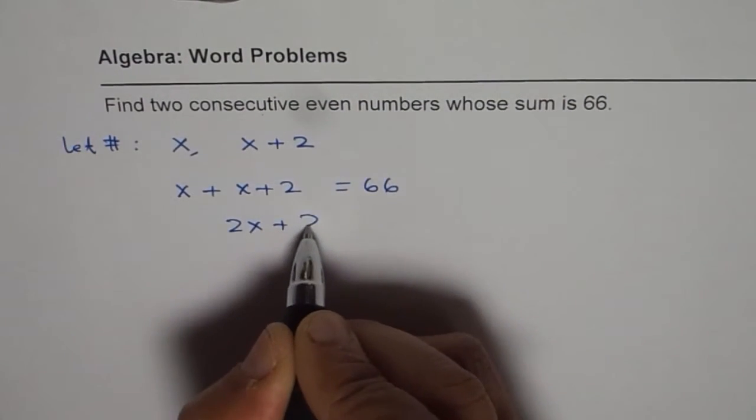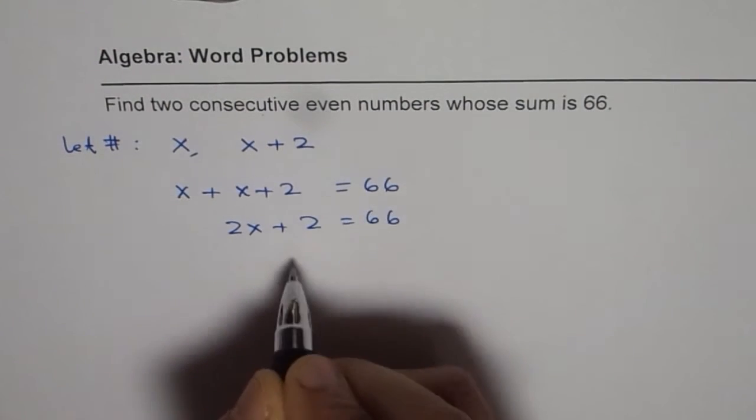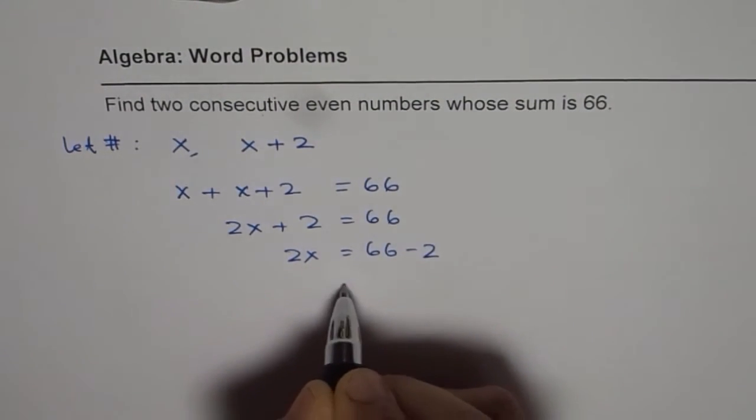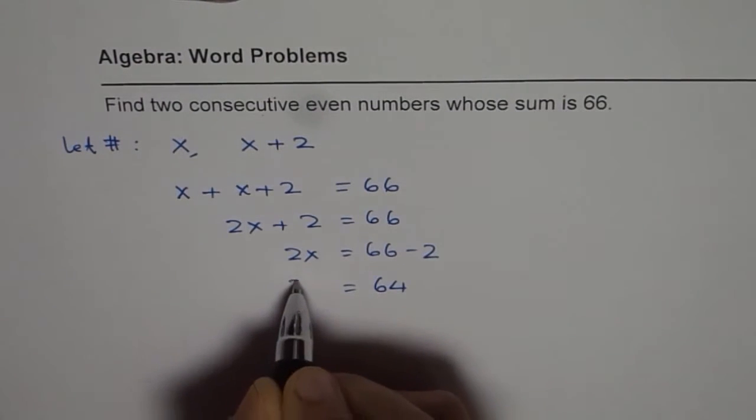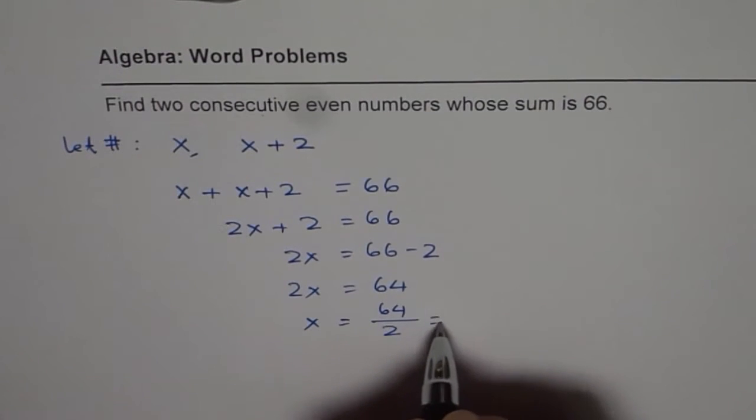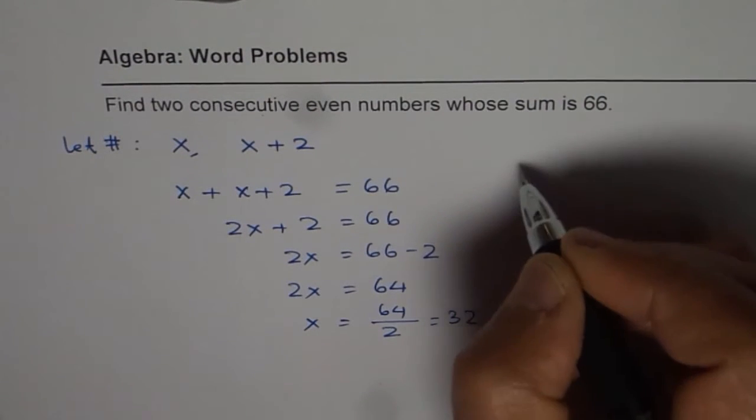So, we have 2x plus 2 equals 66, 2x equals 66 minus 2, that is 64 for 2x, and for x it is 64 divided by 2, that is 32.